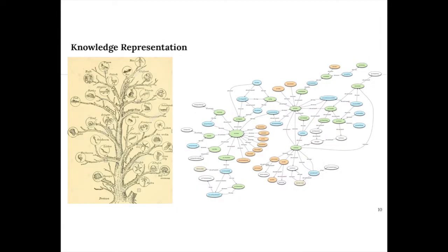Before moving on to the next topic — knowledge representation — I am showing two very familiar structures of knowledge. The image on the left is a tree representation of information and the image on the right is a graph representation. Over the years, across different cultures and even in biblical times, humans have used tree structures to represent their understanding of the world. Family trees document ancestral lineage, taxonomy uses dendrograms to classify living organisms, and phylogenetic trees are used in genomics.